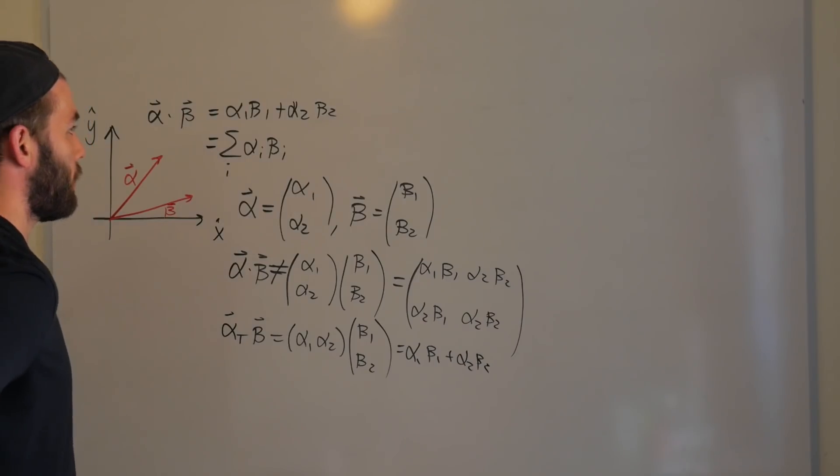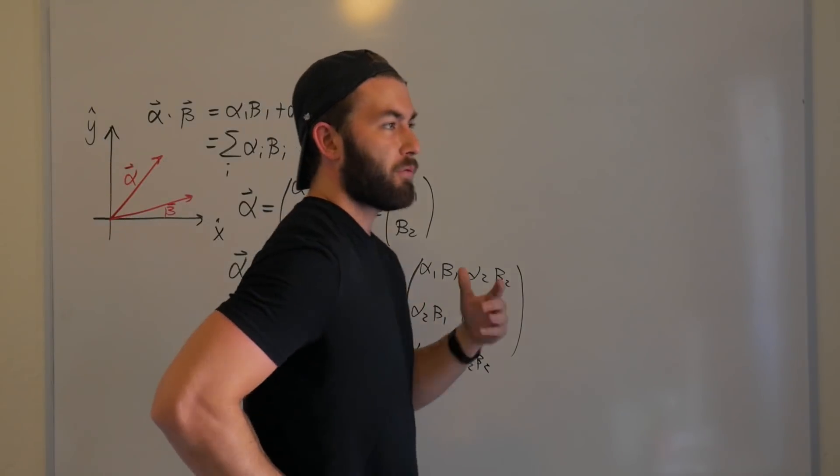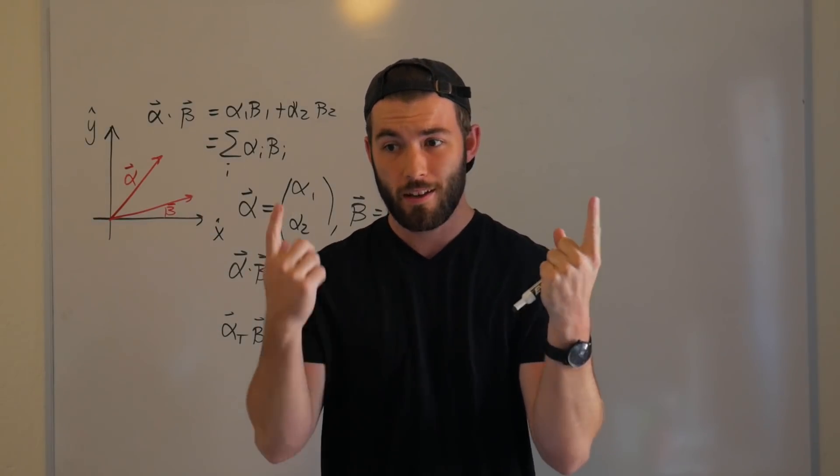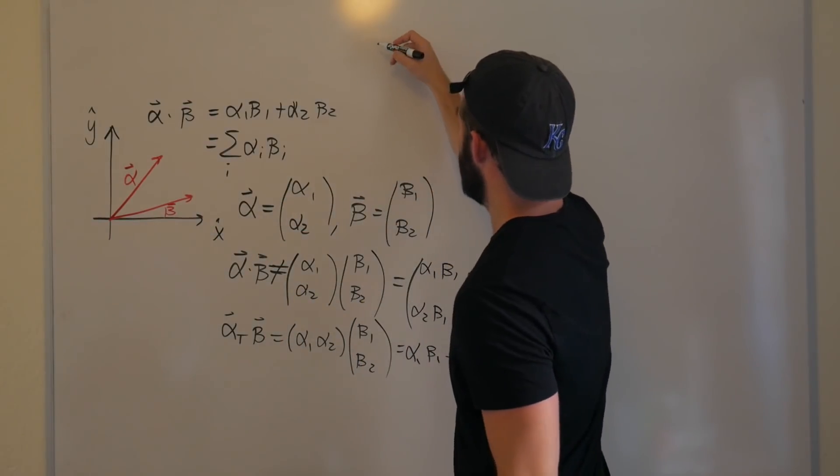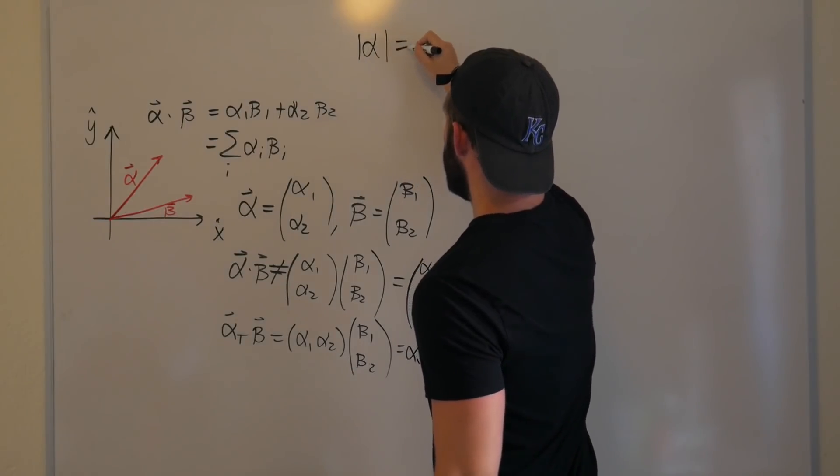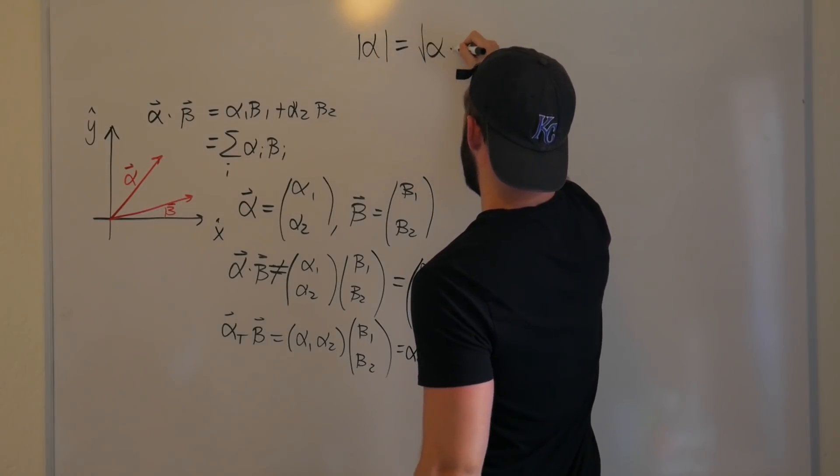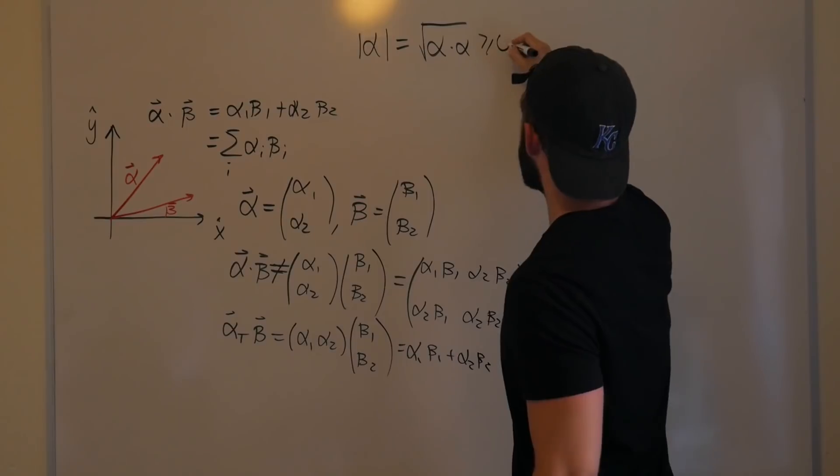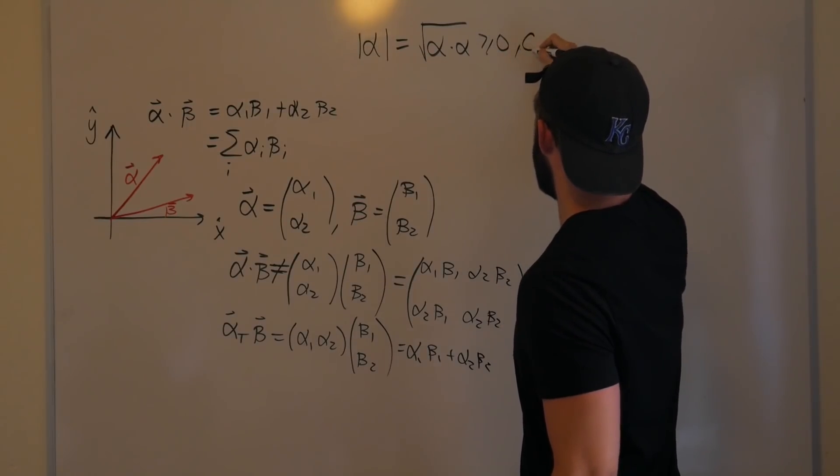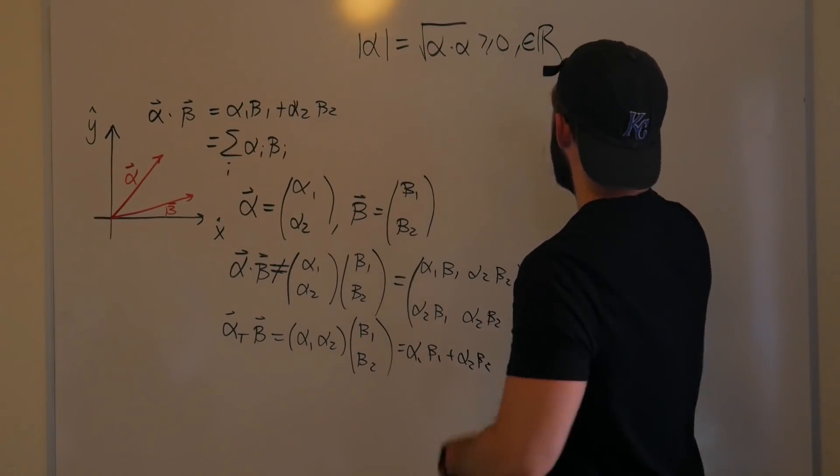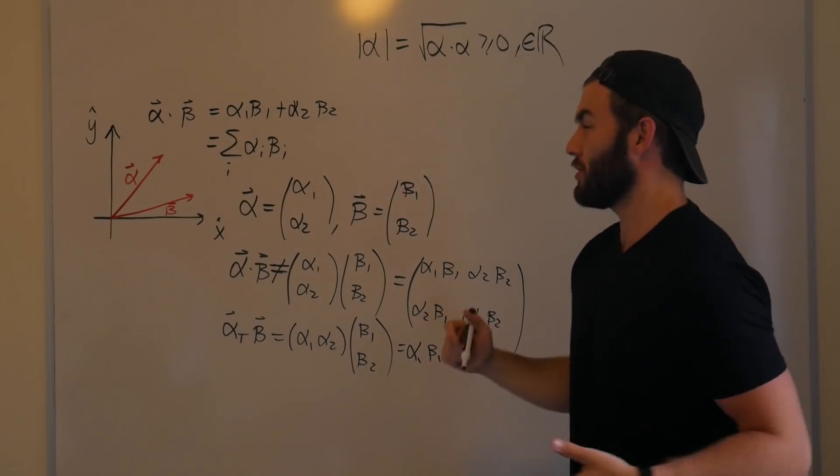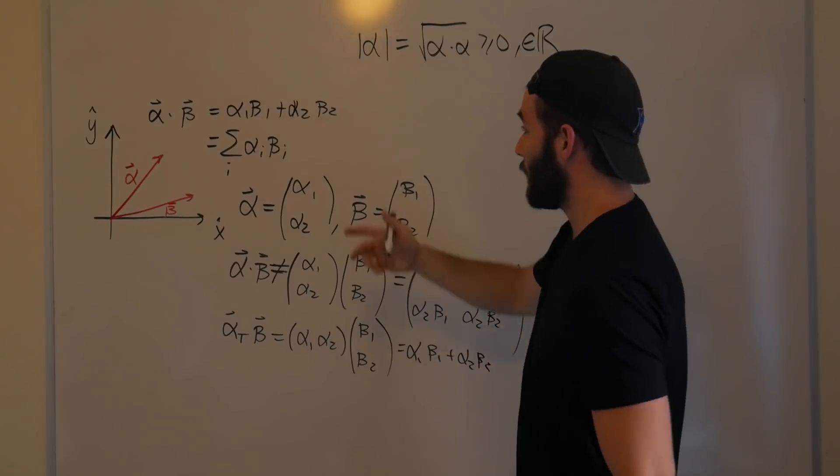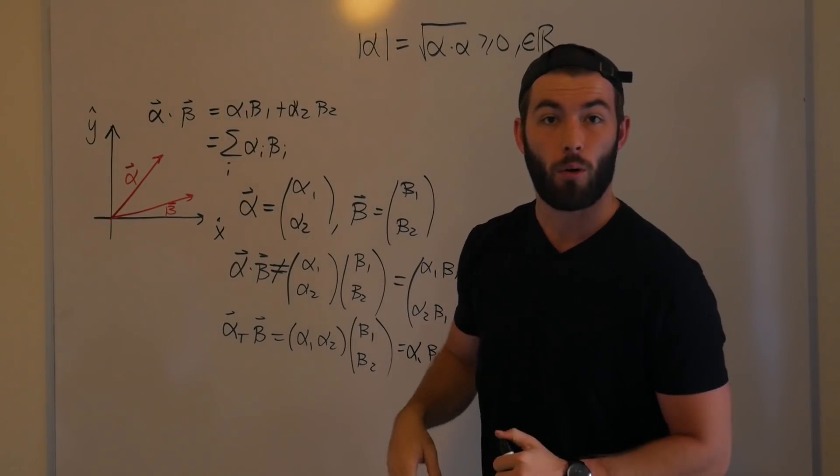Now what's something that we know about our dot products? Well, if we want to find the length of a vector, we know that it's the square root of the dot product with the vector in itself. In other words, the magnitude of alpha is equal to the square root of alpha dot alpha. And this quantity should be positive definite, meaning greater than or equal to zero, which by default means that it's going to be a real number. When we measure lengths, it should be positive or zero. And this should hold no matter what kind of vectors you use, which means alpha and beta are complex. This should still hold.